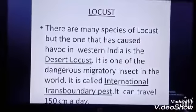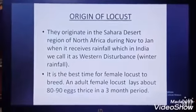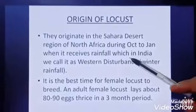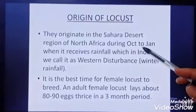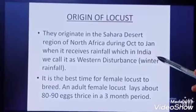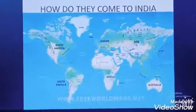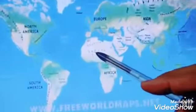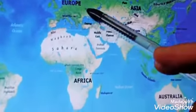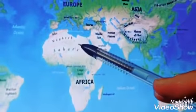It can travel long distances — about 150 km a day. They originate in Northern Africa, which is home to the Sahara Desert, during the months of October to January when it receives rainfall. In India we call it western disturbance. Have a look at the world map: this is the Sahara Desert, and due to a western disturbance in the Mediterranean region, this region gets rainfall and locusts start breeding.